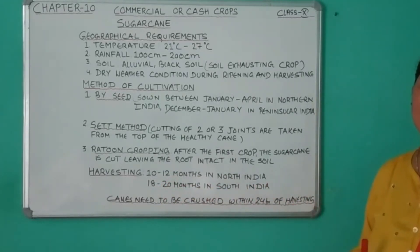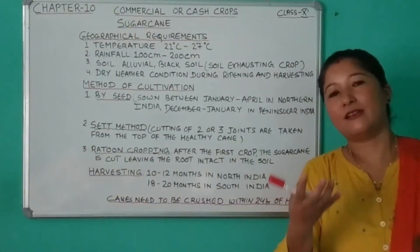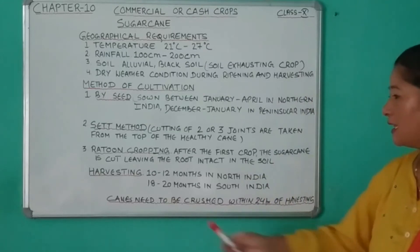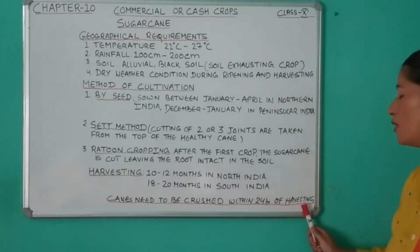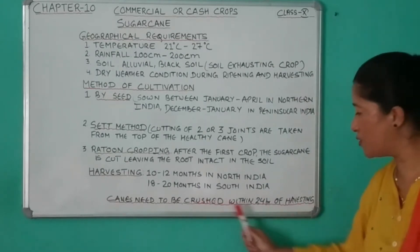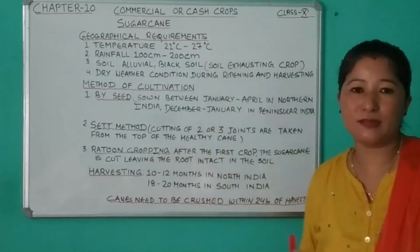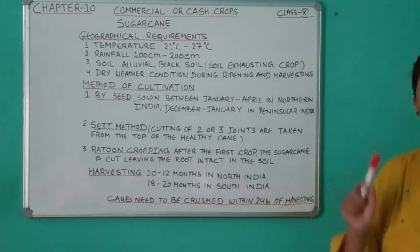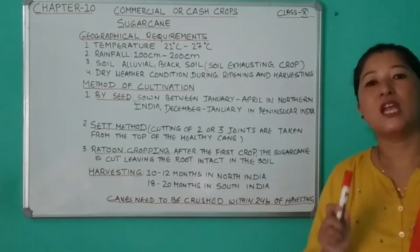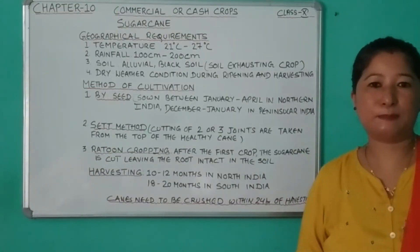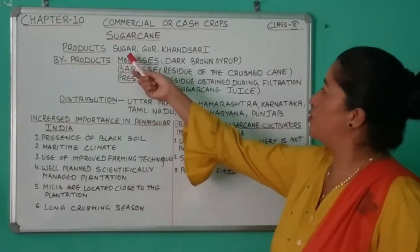Regarding harvesting, sugar cane is harvested in 10 to 12 months in northern India and 18 to 20 months in southern India. Harvesting starts before the cane begins flowering. Importantly, the cane needs to be crushed within 24 hours of harvesting — it must be taken to the mills within 24 hours, otherwise the sucrose content will decrease.